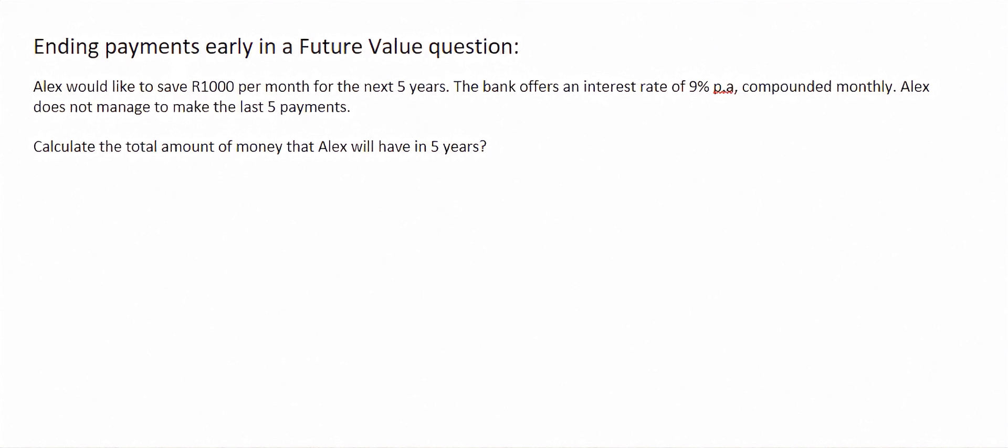So here we have a person who is wanting to save money for the future and they're making regular payments, so we're going to use the future value formula. When you use this formula, you should always start paying after one month, and your last payment should always be at the very end.